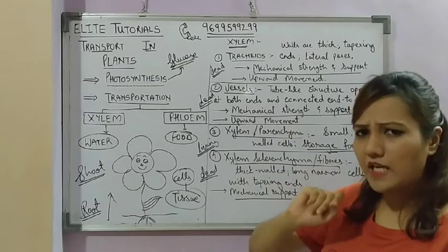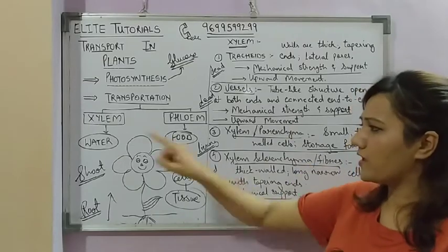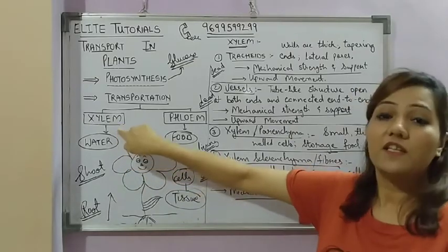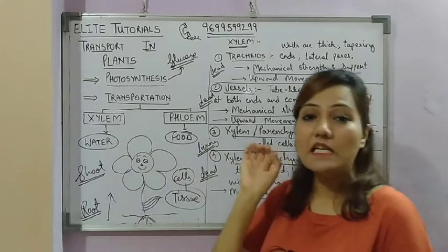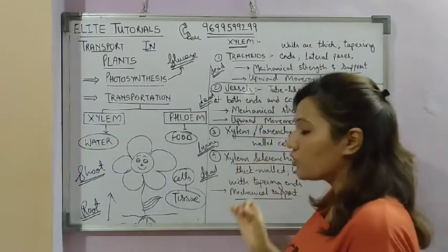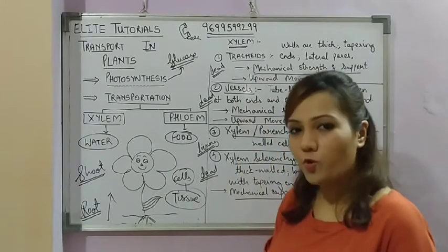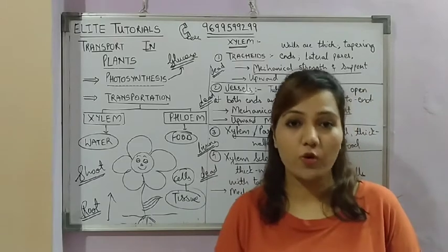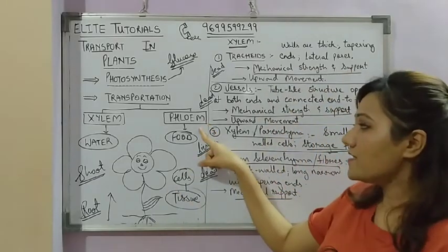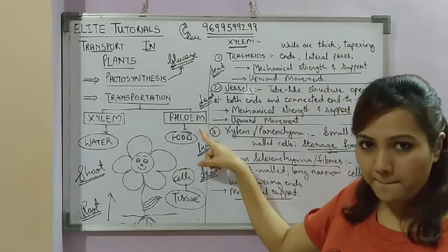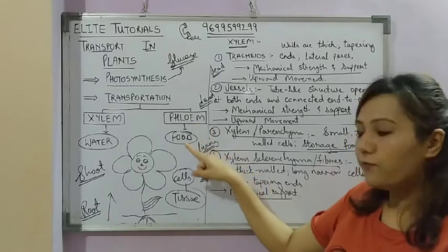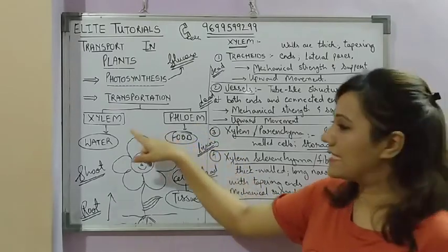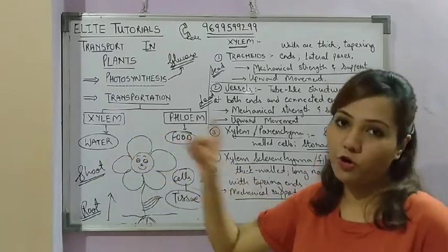The tissue specialized for transporting water is called xylem. The tissue specialized for transporting food is called phloem. Remember it this way: phloem transports food, xylem transports water.